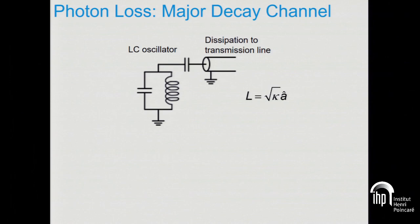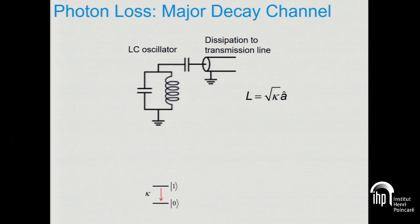Let's talk about loss now. You can have an oscillator made out of an LC oscillator — just an inductor coupled with a capacitor — and usually this is coupled to an environment, whether you want it or not. This loss is modeled by a loss operator — a jump operator L equal to sqrt(kappa) times A, where kappa is the rate at which energy leaves your system into the environment and A is the annihilation operator. What this loss does is collapse the 1 state to the 0 state at some rate kappa. It's somewhat similar to bit flip errors, though it's not the same since 1 goes to 0 and 0 goes to 0.